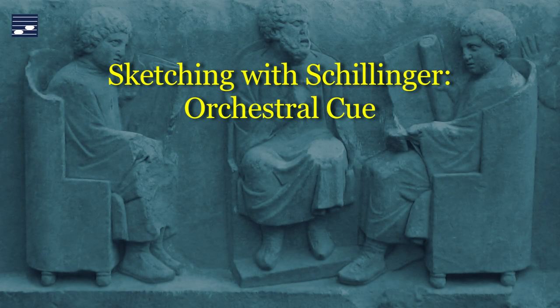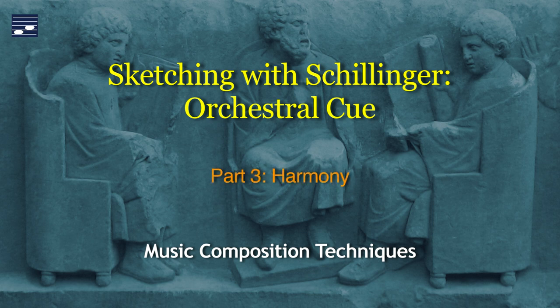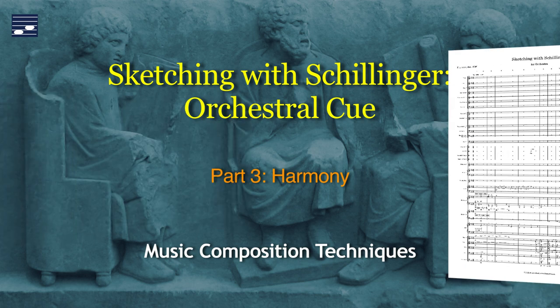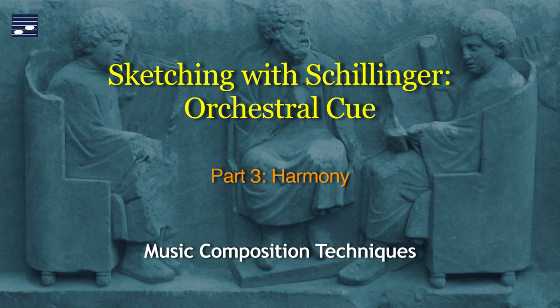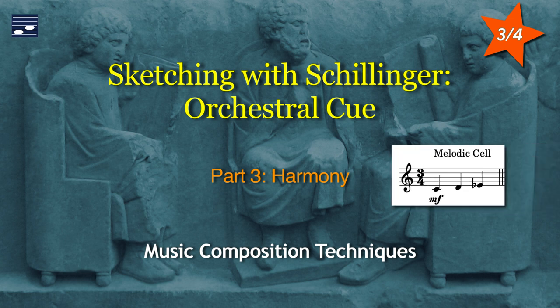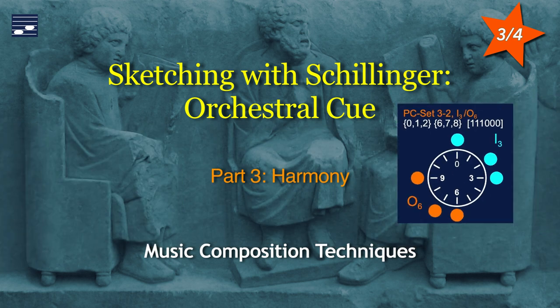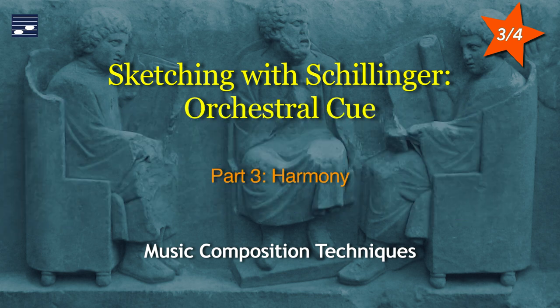This tutorial continues the series called Sketching with Schillinger. These four episodes are the result of viewer requests for more details on getting from basic sketches with composition techniques to a finished composition. In part 1 you'll find the full composition. Part 2 discusses processes in the melody domain. In this video, part 3, we'll look at options for deriving harmony from an elementary melodic cell — diatonic chord progressions and pitch class set options. The combination of melody and harmony is the subject of part 4.